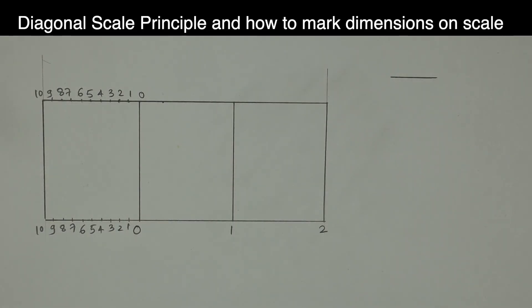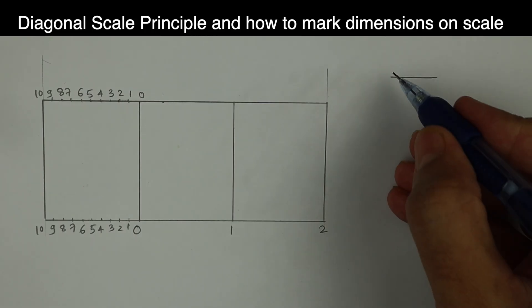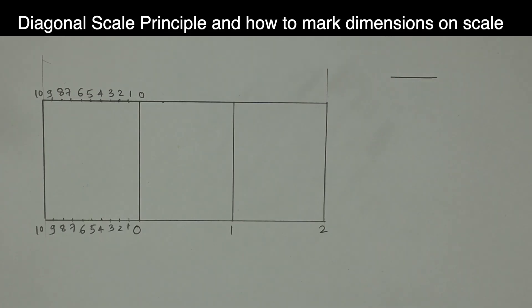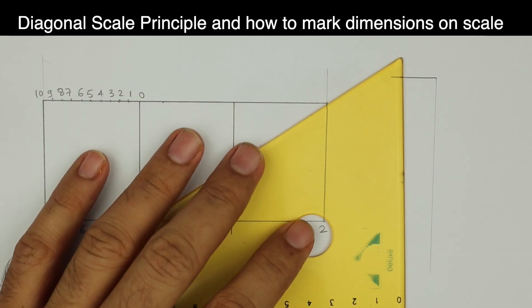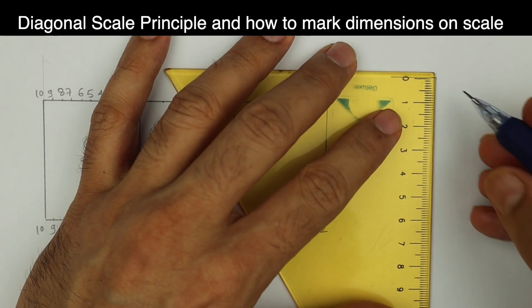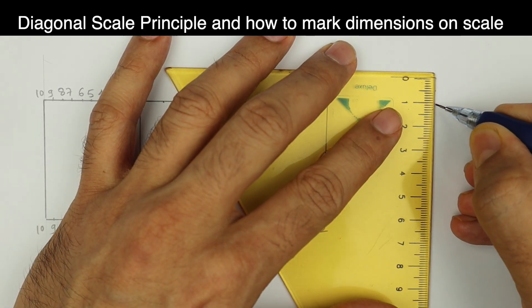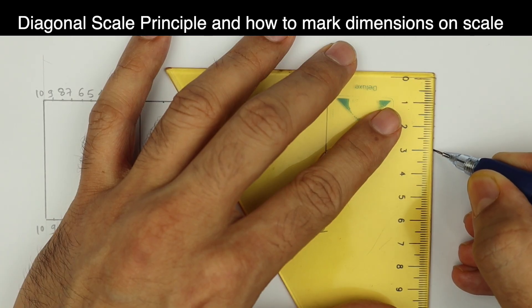Welcome to technical drawing. Today we're going to learn diagonal scale principle. Let's say we have a line and we want to divide this line into 10 equal parts. So what we will do first, we will draw one vertical line and we'll mark 10 equal arcs like 0.5, 0.5, 0.5.